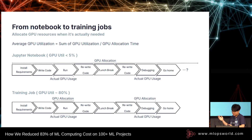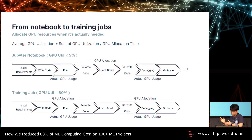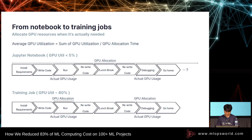But if you use training jobs, you can allocate GPUs exactly at the time the code is executed, so you can efficiently use your GPUs. That's why training jobs extremely reduce computing costs in cloud machines.